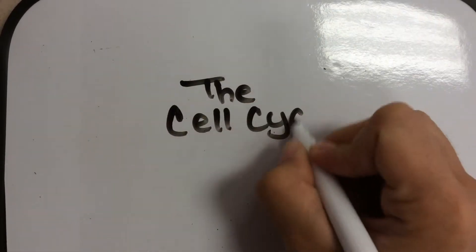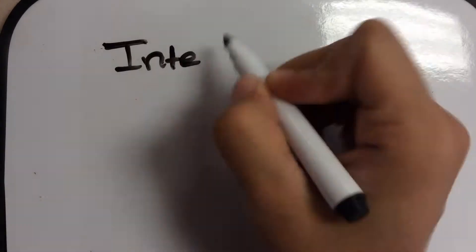The cell cycle. The first phase is called interphase. There are three phases in interphase.